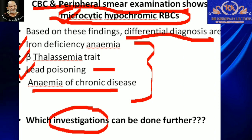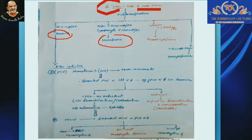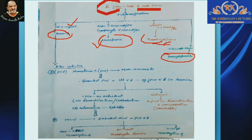In the complete blood count (CBC), we look at the three cell lines. On the basis of these three cell lines, we can classify findings as anemia, leukopenia, thrombocytopenia, or pancytopenia. If hemoglobin is less than 10 g/dL, it is anemia. If WBC is less than 4,000 or leukocyte count is less than 1,000 per microliter, it is leukopenia. If platelets are less than 1 lakh per deciliter, it is thrombocytopenia. If the defect is in greater than two cell lines, it is called pancytopenia.